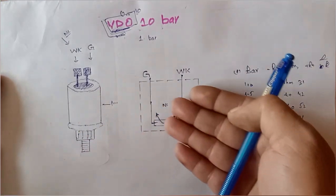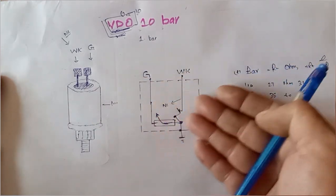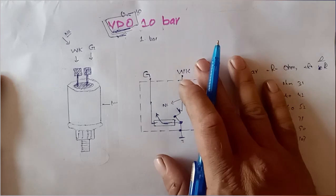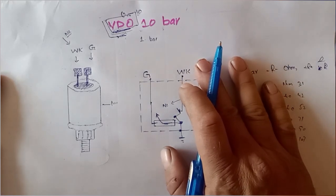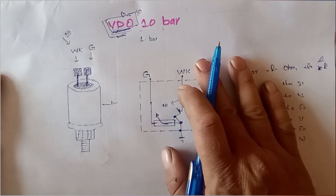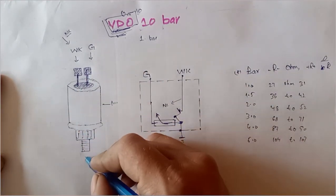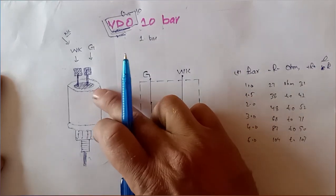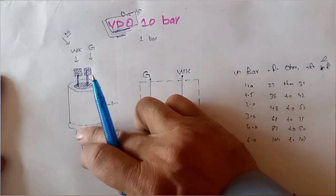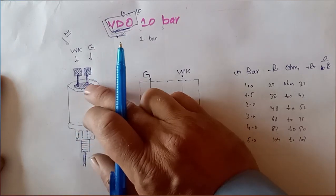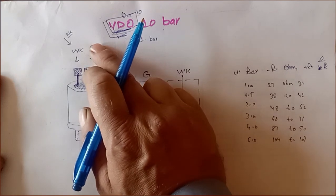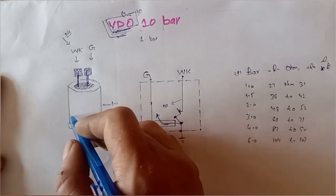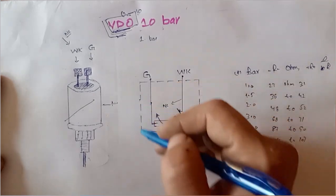Now this is the sensor diagram — the internal diagram picture. First, let's talk about how the sender works. This sender converts mechanical energy to electrical energy. That means it takes the oil pressure from our engine oil pump — that oil pressure is mechanical energy — and converts it to electrical energy, that means resistance in ohms. This is the functioning of this sensor.